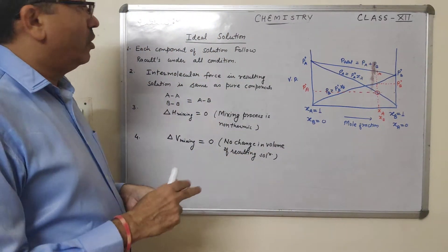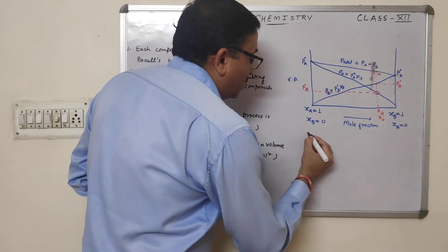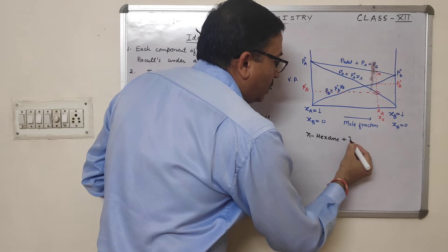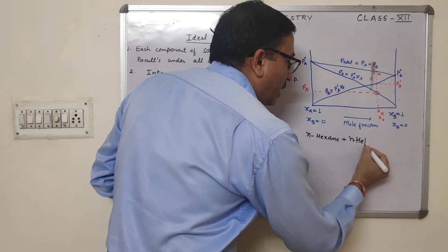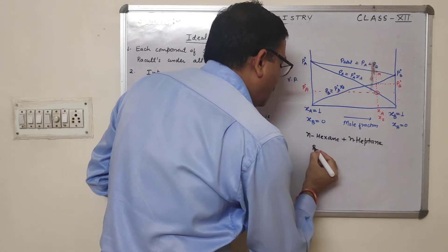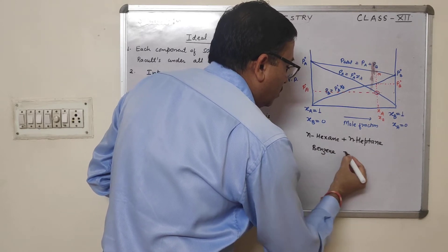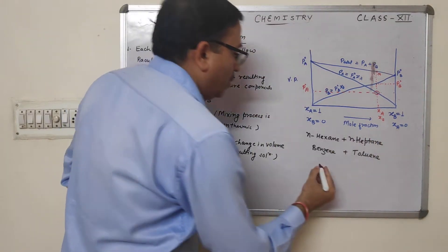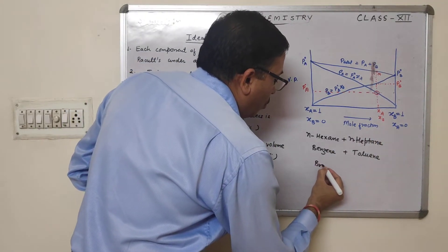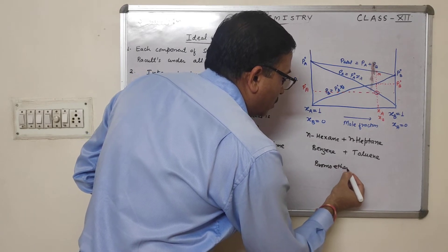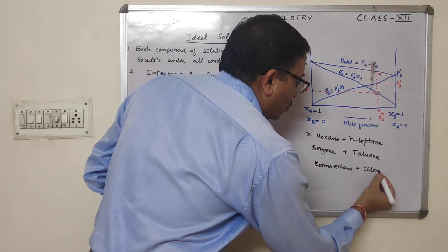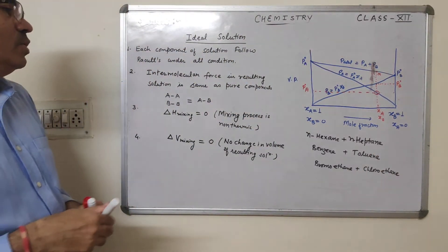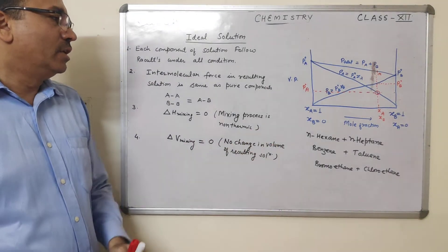Examples of ideal solutions you must know. The best example is N-hexane plus N-heptane. These are the examples of ideal solutions.